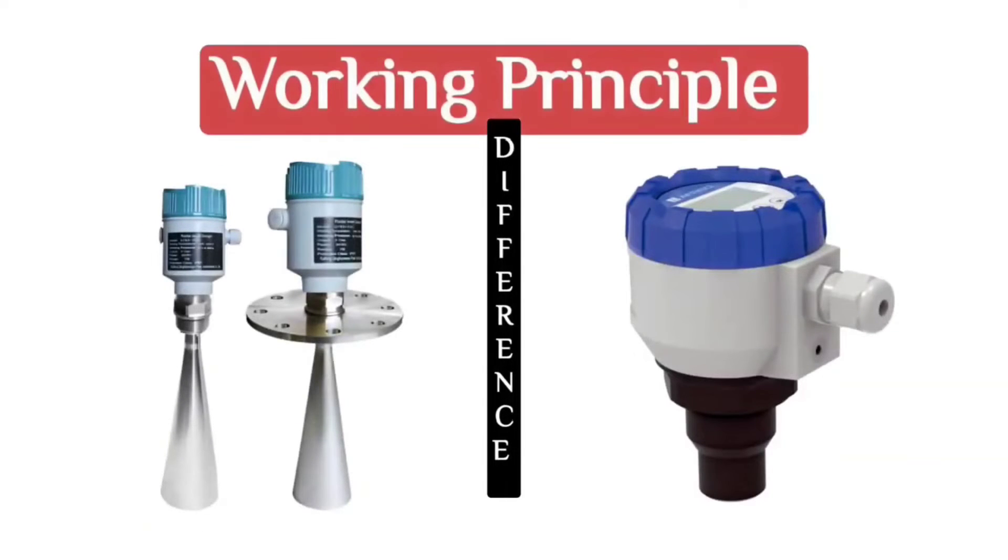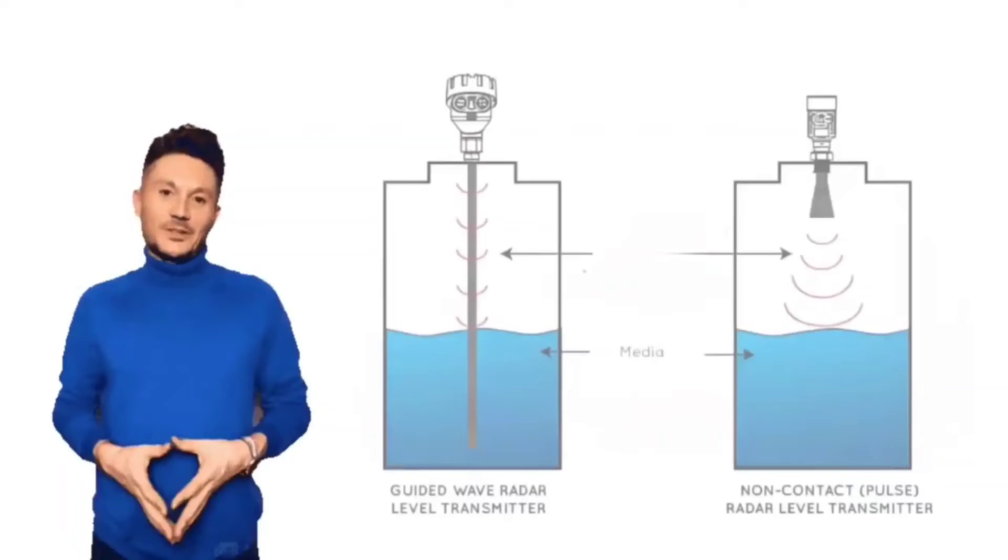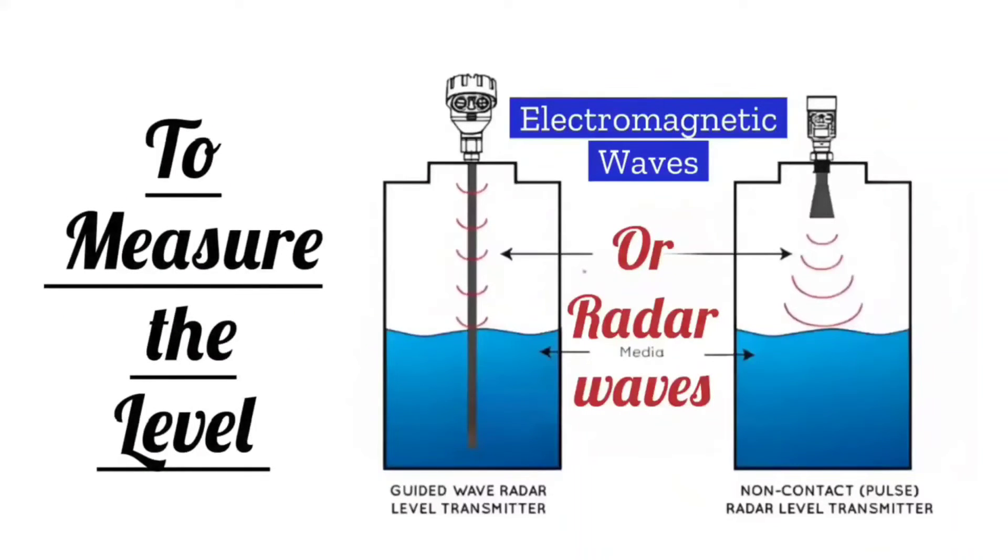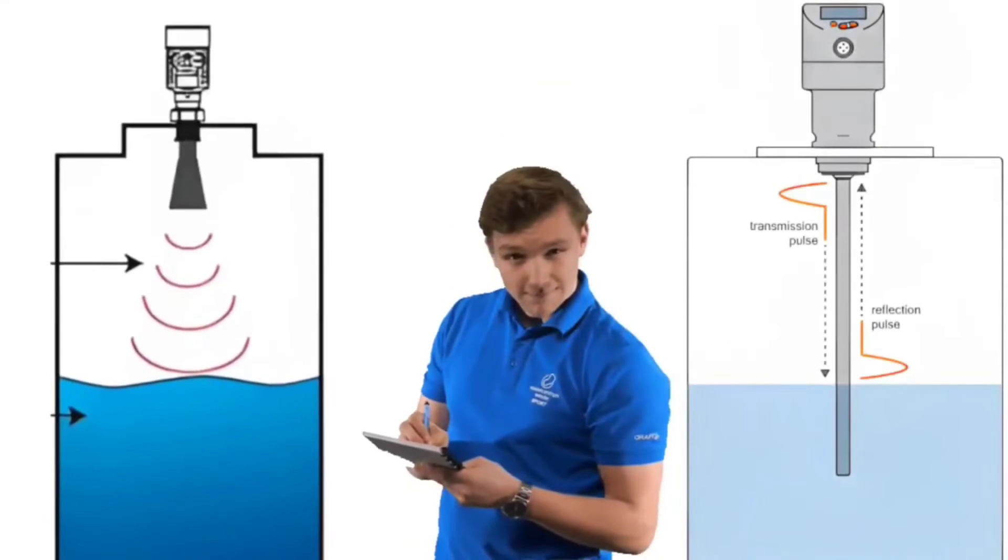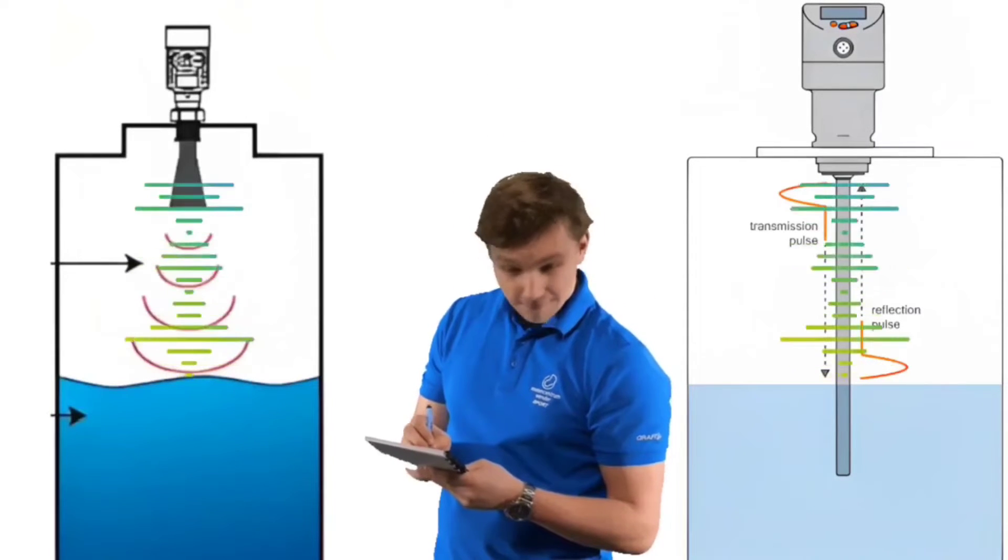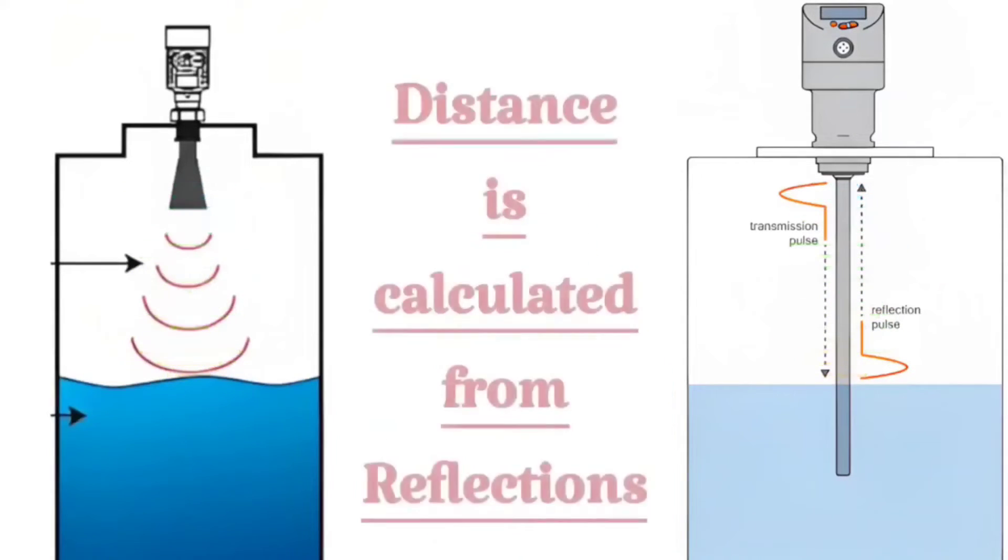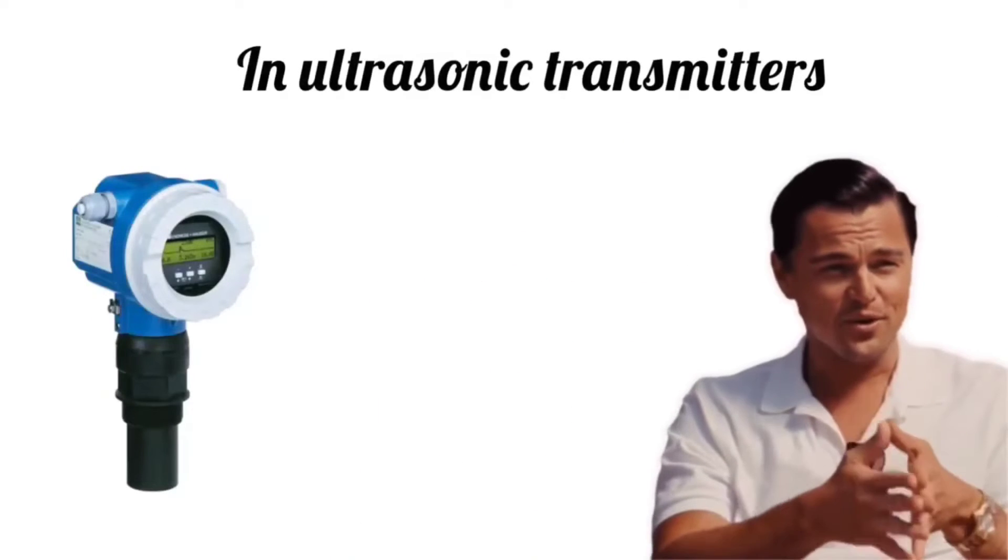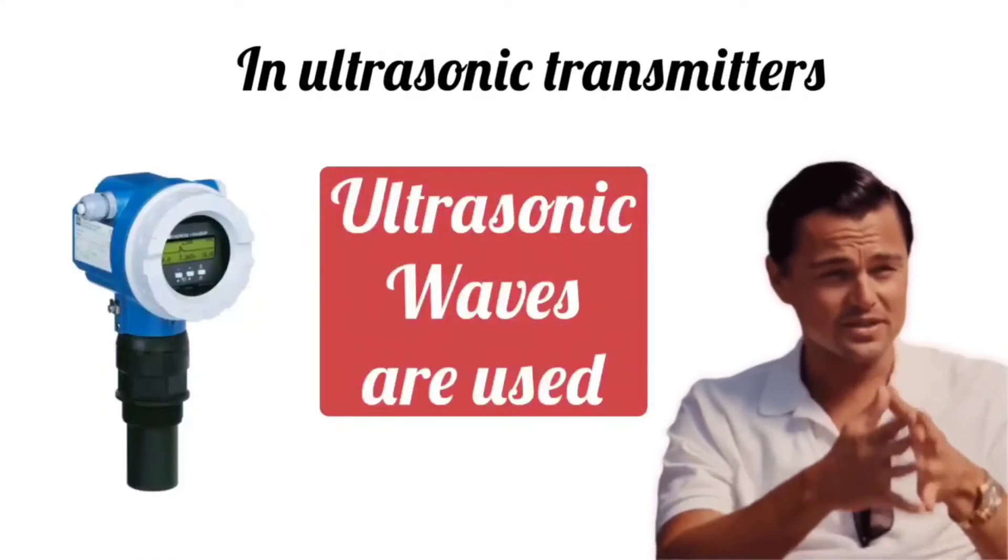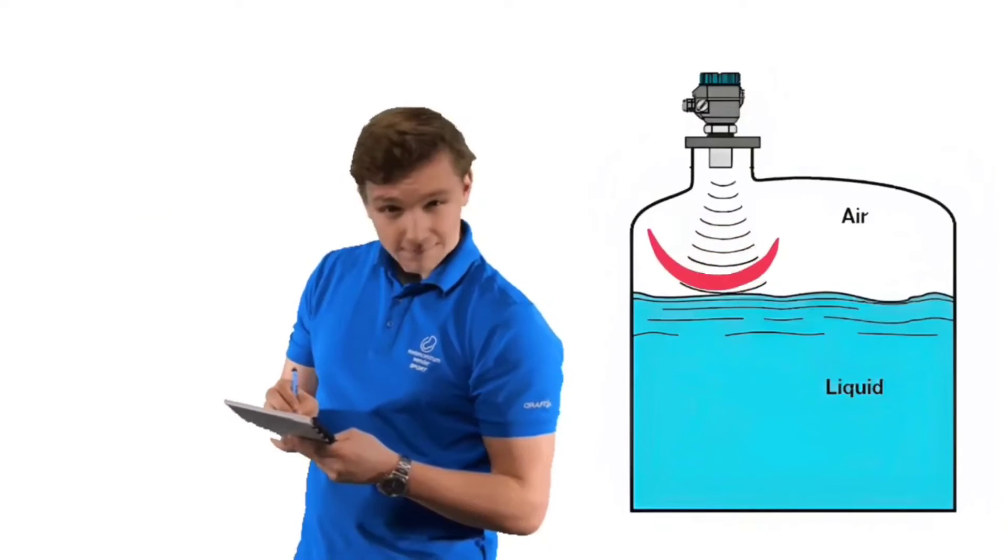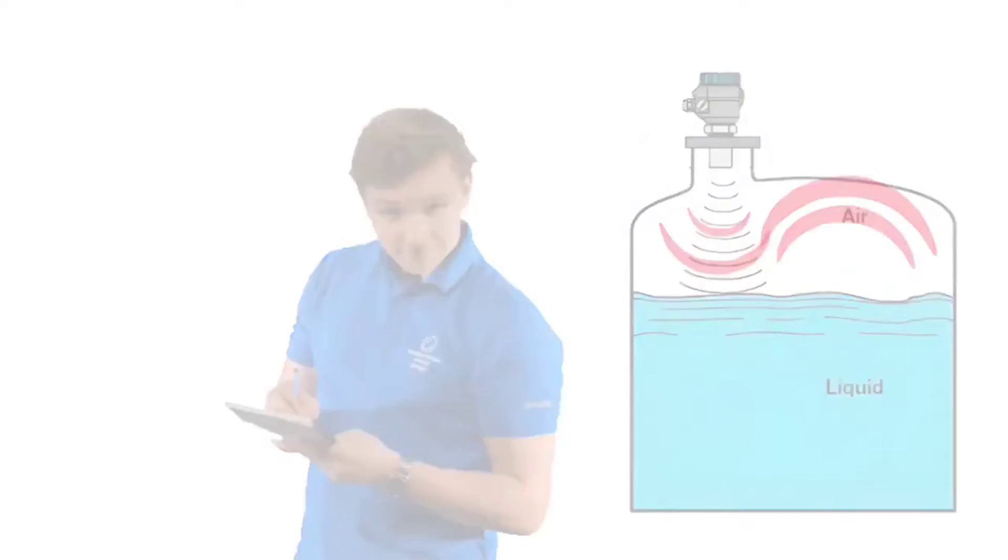First difference: the working principle. Radar level transmitters use electromagnetic waves or radar waves to measure the level. These waves hit the target material like liquid or solid, meaning these waves hit the surface of the material or liquid whose level is being measured, and the distance is calculated from their reflections. In ultrasonic level transmitters, ultrasonic waves are used to measure the level. In ultrasonic level transmitters, sound waves collide with the target material, and from their echoes the distance or level is calculated.